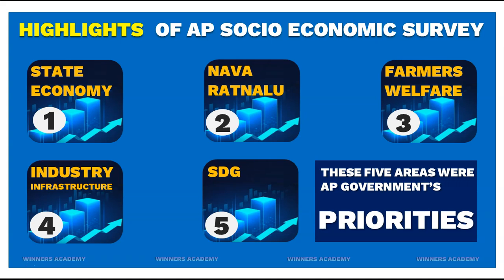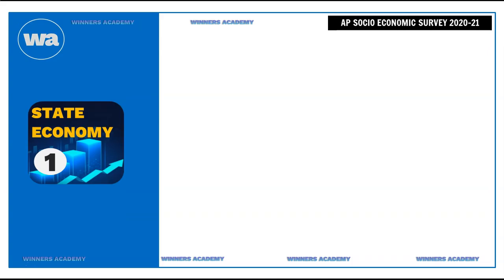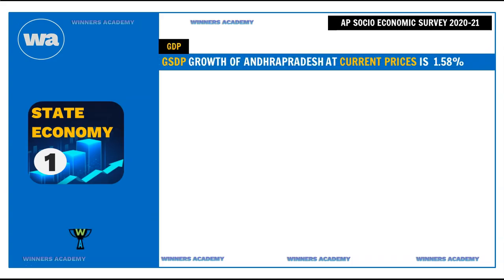First priority is State Economy. The first indicator of any economy is GDP. For a state, it is called GSDP — Gross State Domestic Product. The GSDP growth of Andhra Pradesh at current prices is 1.58%. Current prices means nominal GDP. Comparing this to India's GDP at current prices for 2020-2021, India recorded a negative growth rate of minus 3.8%, whereas Andhra Pradesh recorded a positive growth of 1.58%.